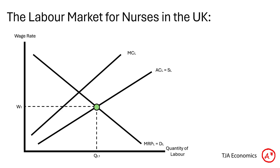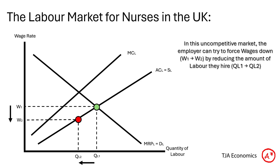We have our competitive equilibrium at W1 and QL1, but due to their monopsony power, the NHS will try to force wages down for nurses and also reduce the amount of labour they actually hire. So wages will fall from W1 to W2, and the quantity of labour will fall from QL1 to QL2.